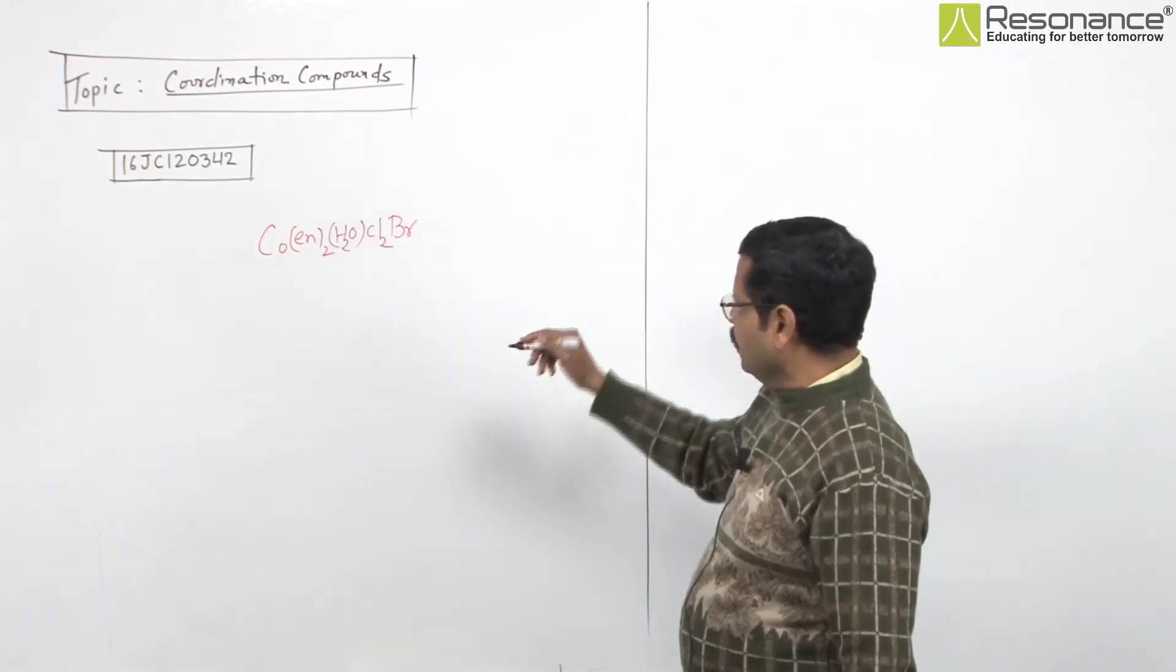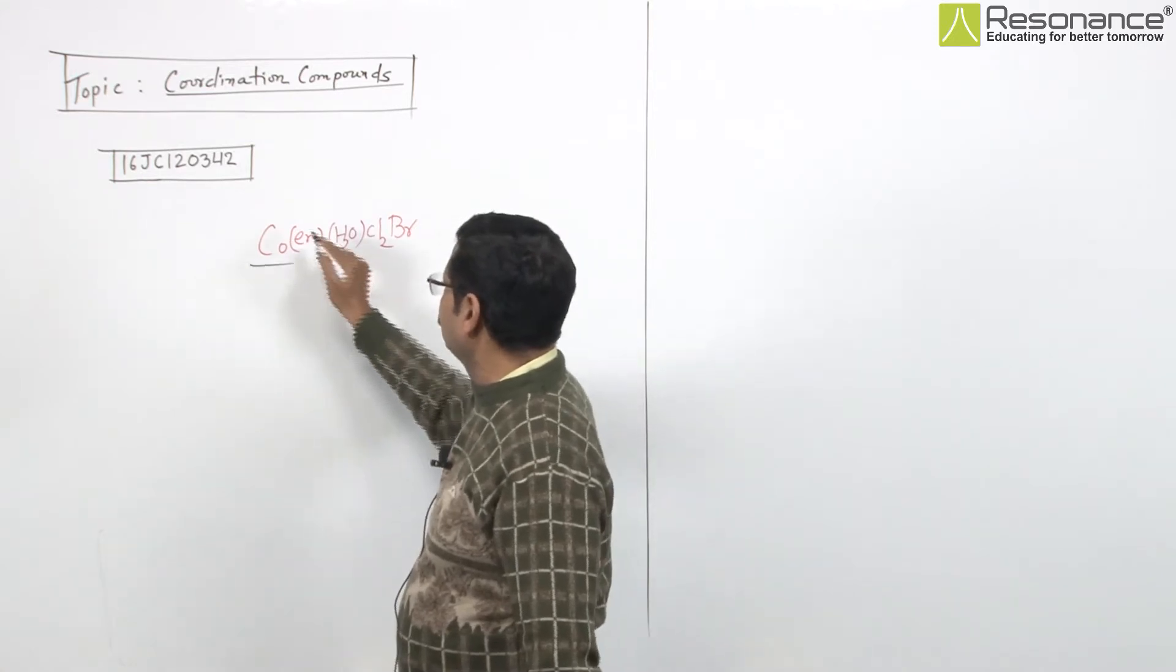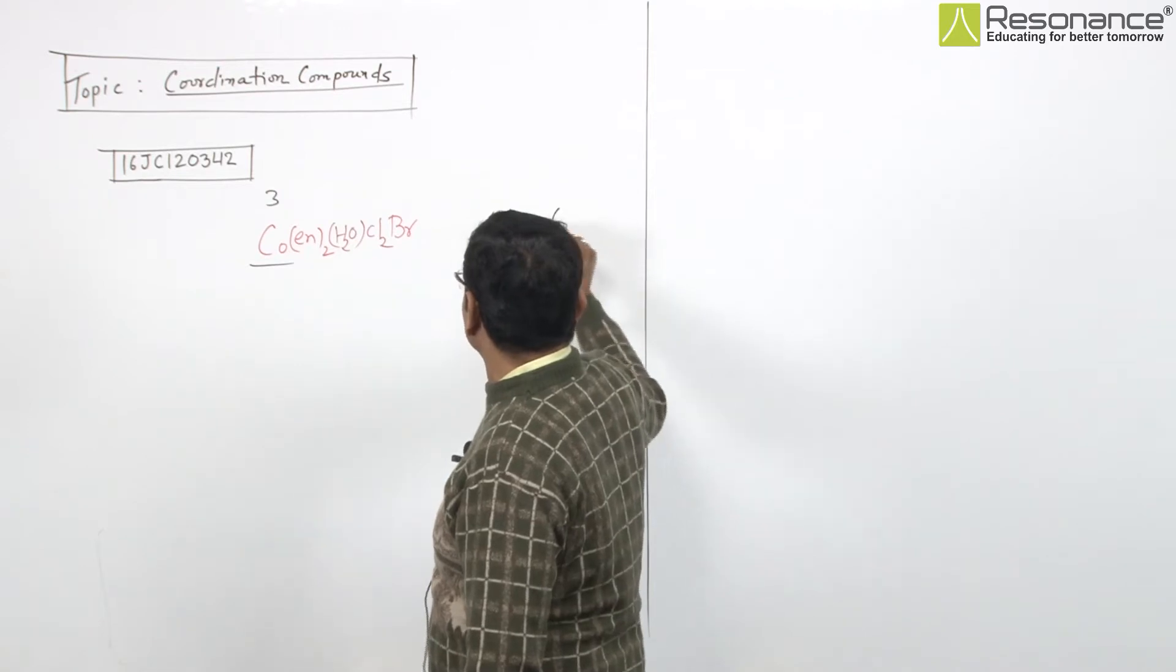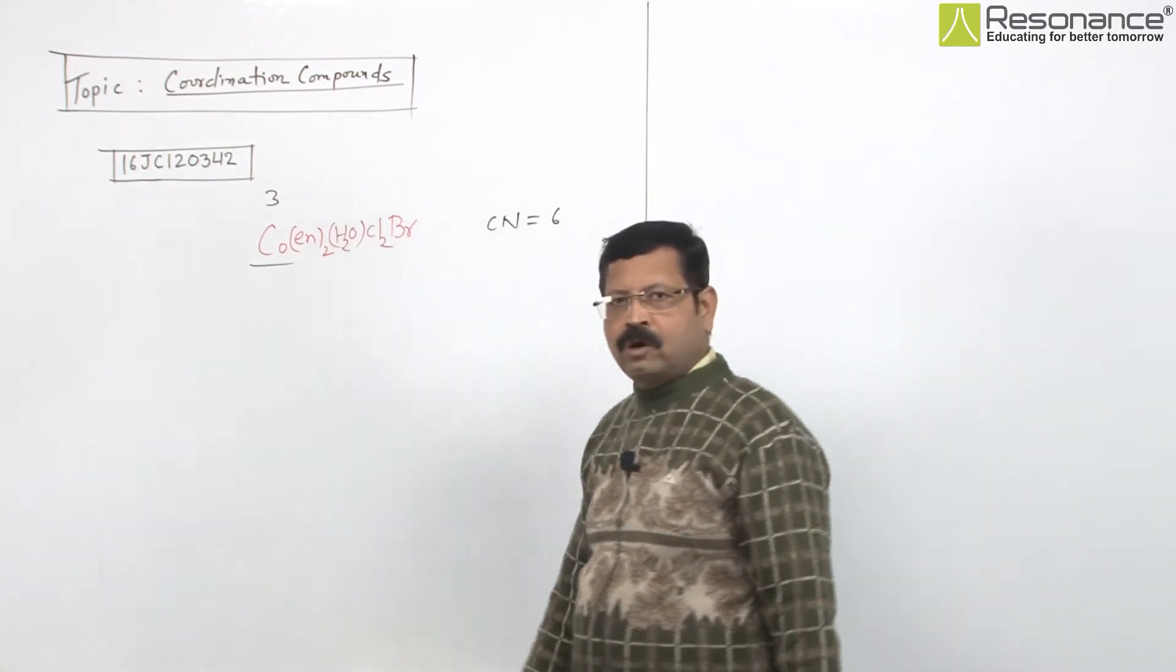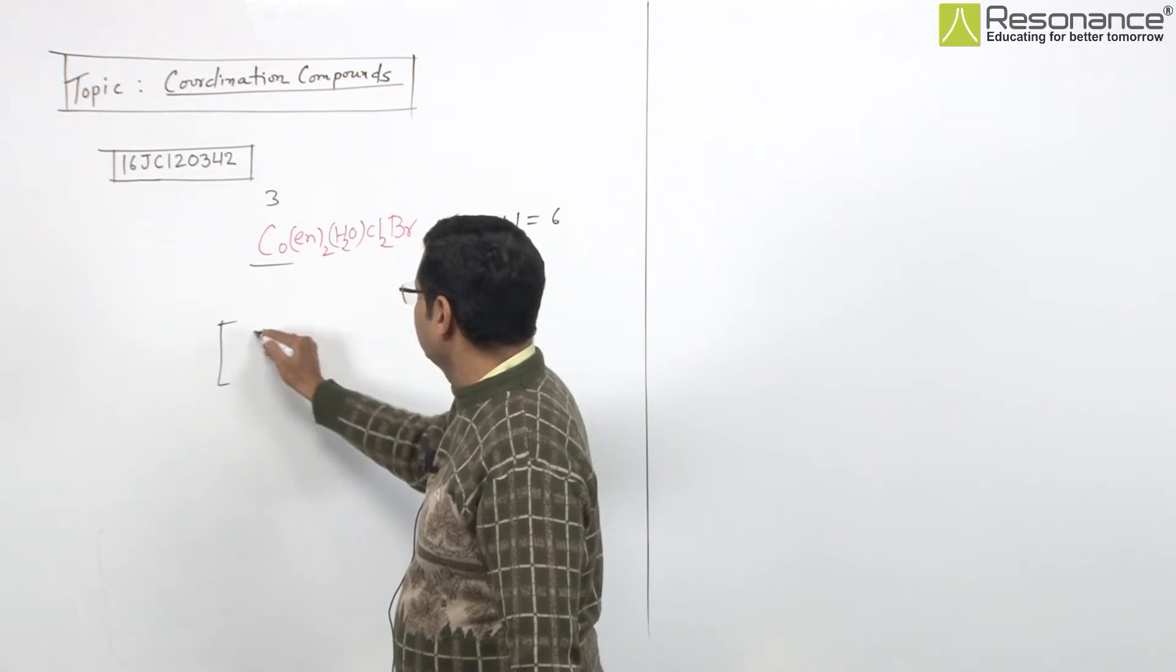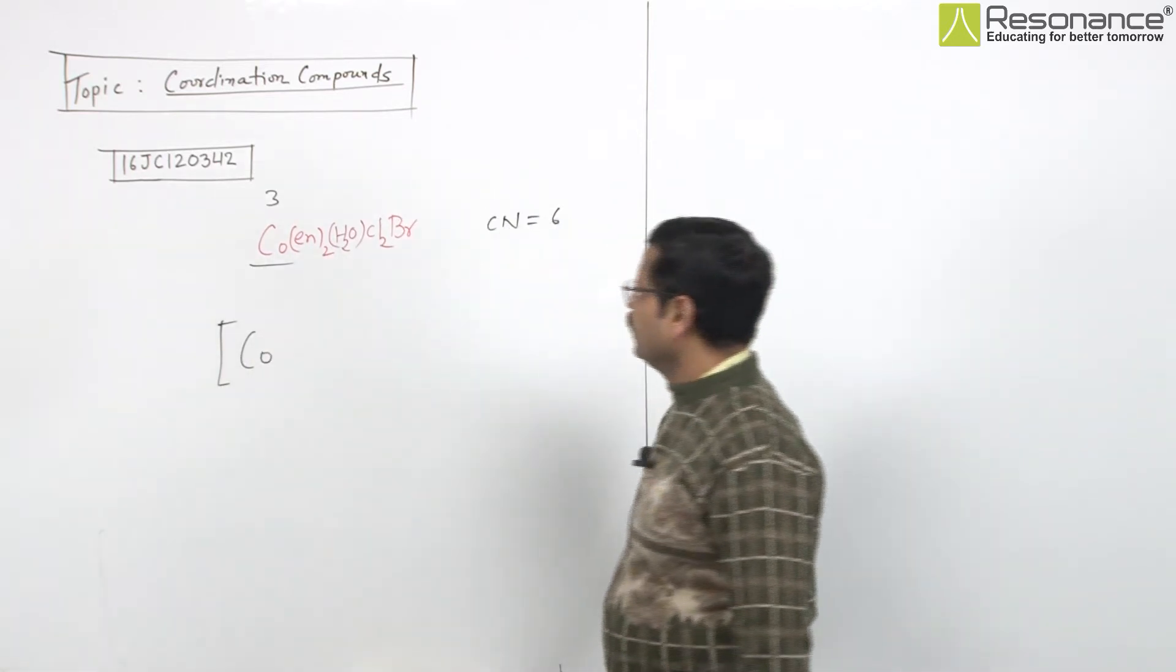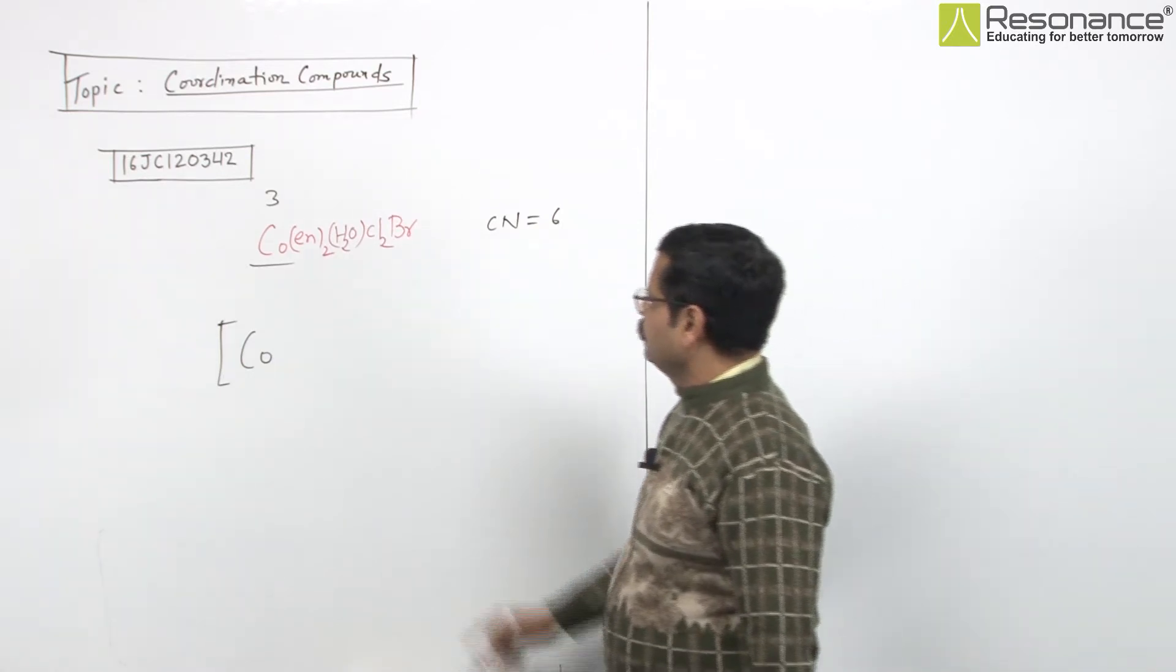So Cl has to be placed here. Cobalt is +3, which has coordination number 6. In Co2+ it's 4 and 6, but in general here it's 6, so we proceed accordingly. Now, en is bidentate - ethane-1,2-diamine - so 2×en gives 4 coordination sites.